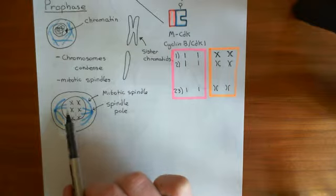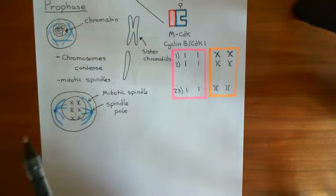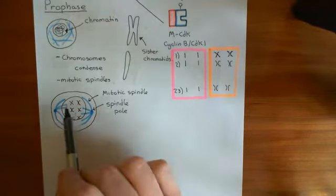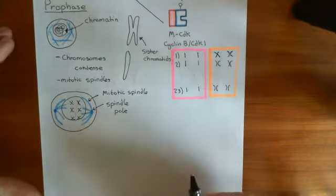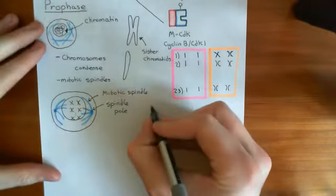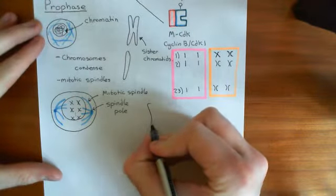Each one of the 46 chromosomes is not just a singleton anymore — it's joined to an utterly identical copy of itself, the copy that it made in the S phase, and they're joined at this centre portion known as the centromere.